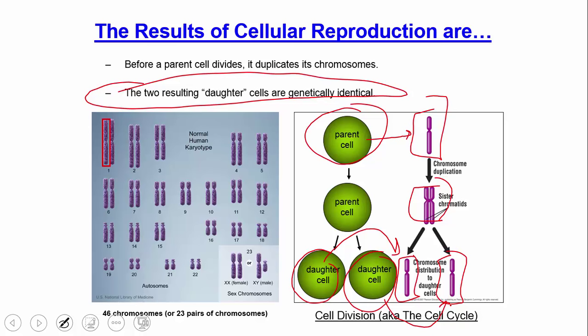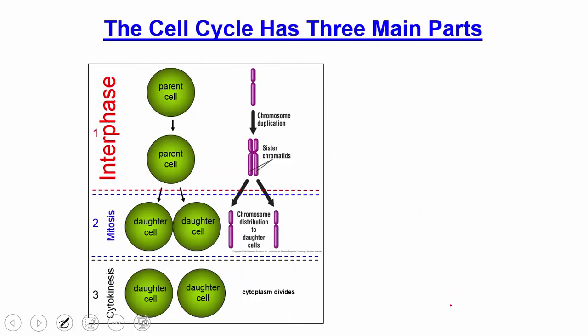The cell cycle has three main parts: interphase, mitosis, and cytokinesis. In interphase, one of the main events is chromosomal duplication. In mitosis, we get chromosomal division. Then in cytokinesis, the cytoplasm divides and we have two daughter cells. So if mitosis is chromosome division, then cytokinesis is cell division.